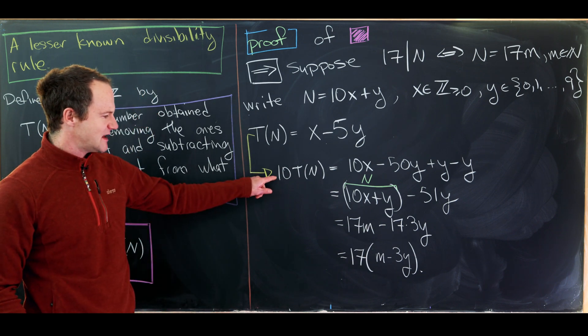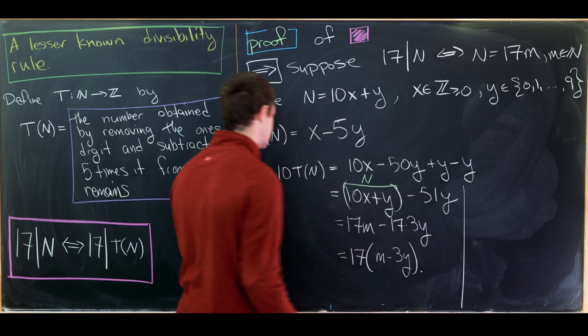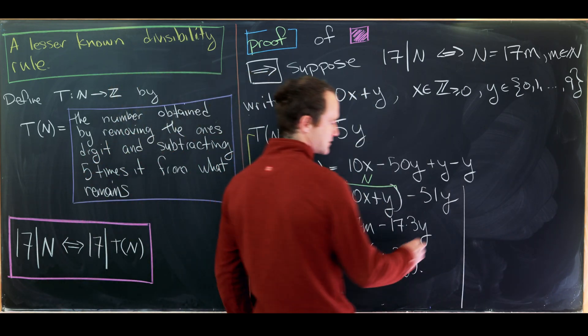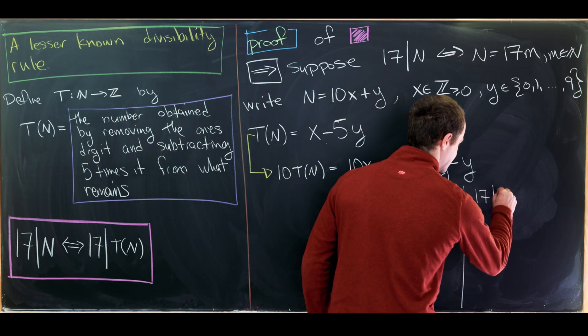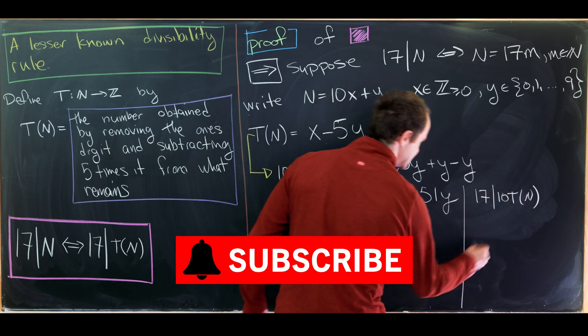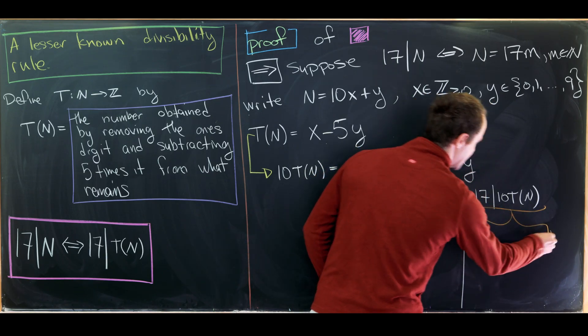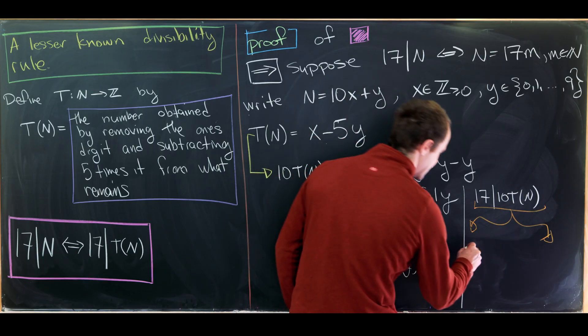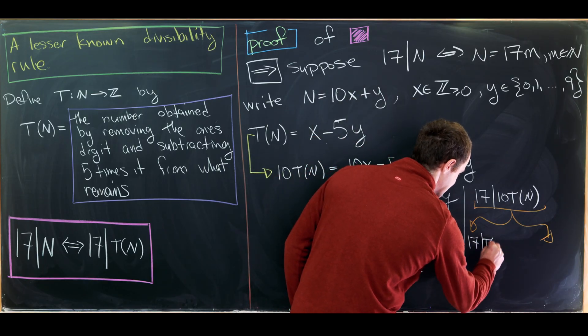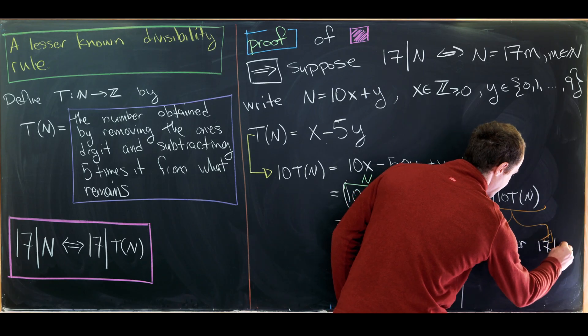But let's notice that means that 17 divides 10 times T(n). So let's bring that over here. So we have 17 divides 10 times T(n). But then since 17 is a prime number, this splits into two cases. The first case is 17 divides T(n). In the second case is 17 divides 10. So that's a defining property of the prime numbers.